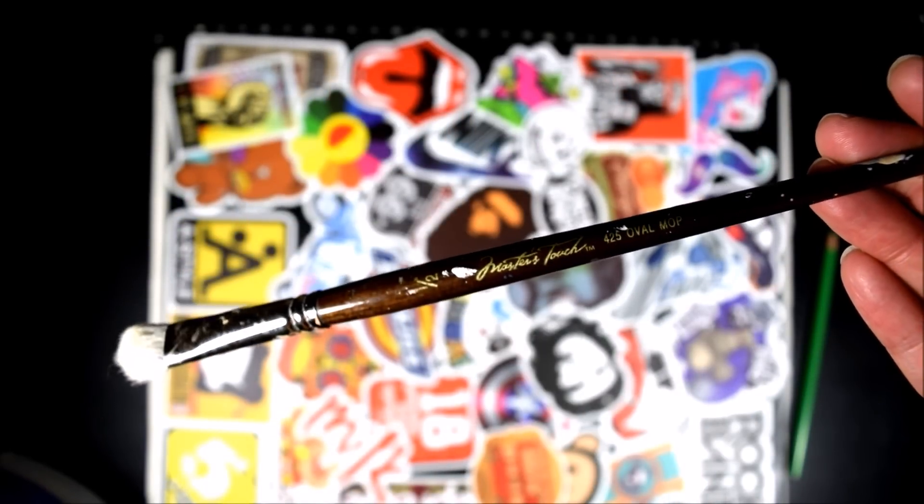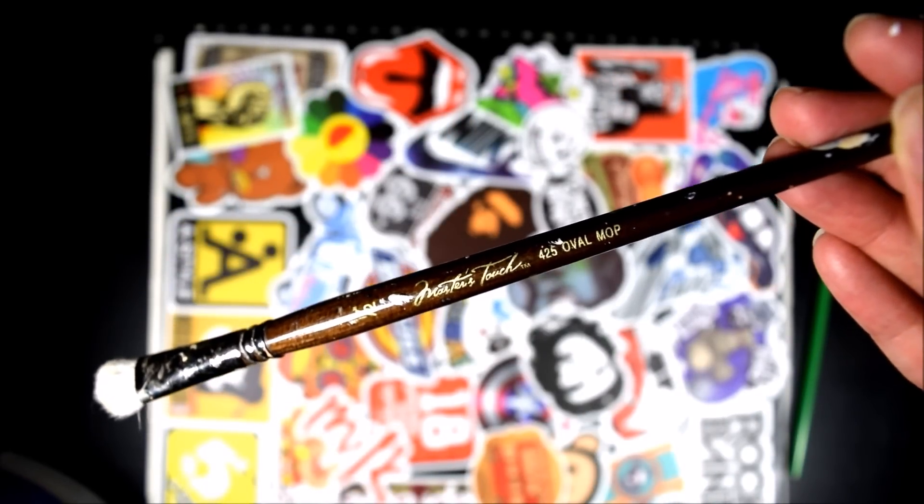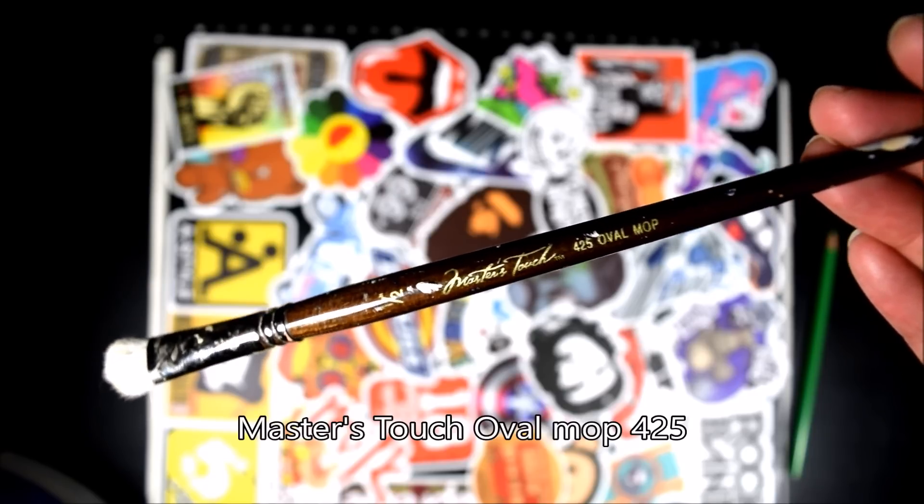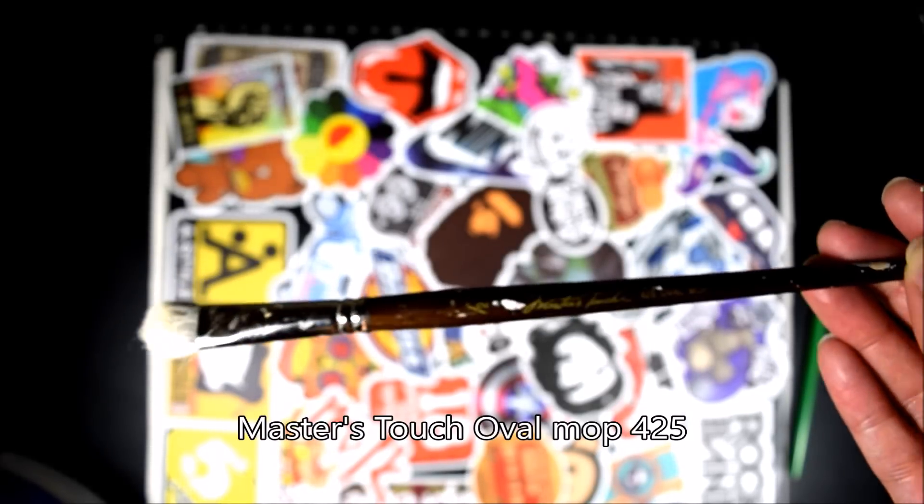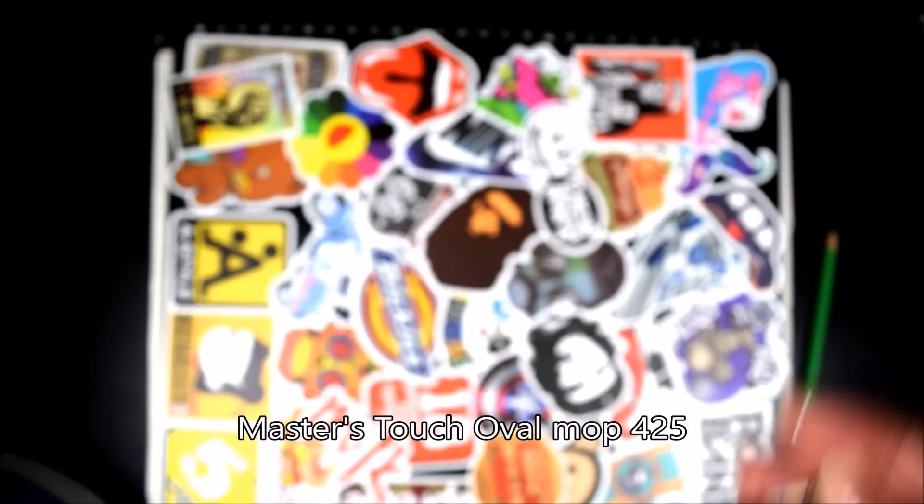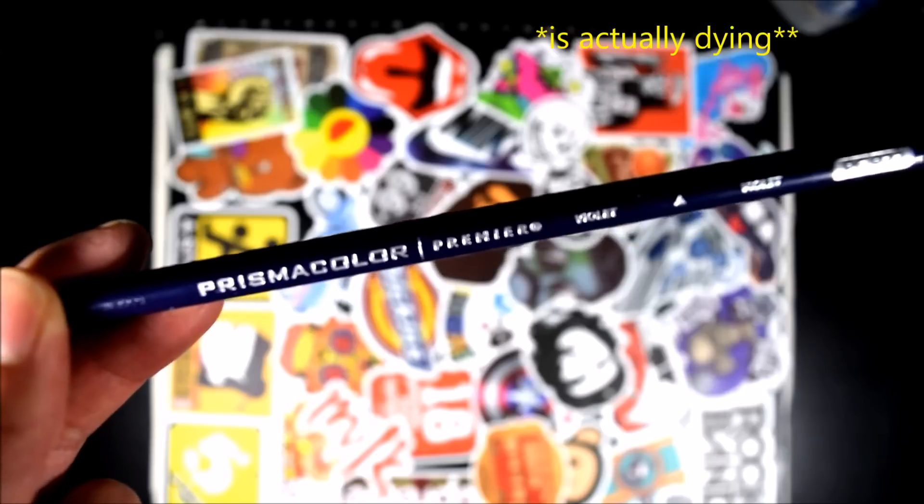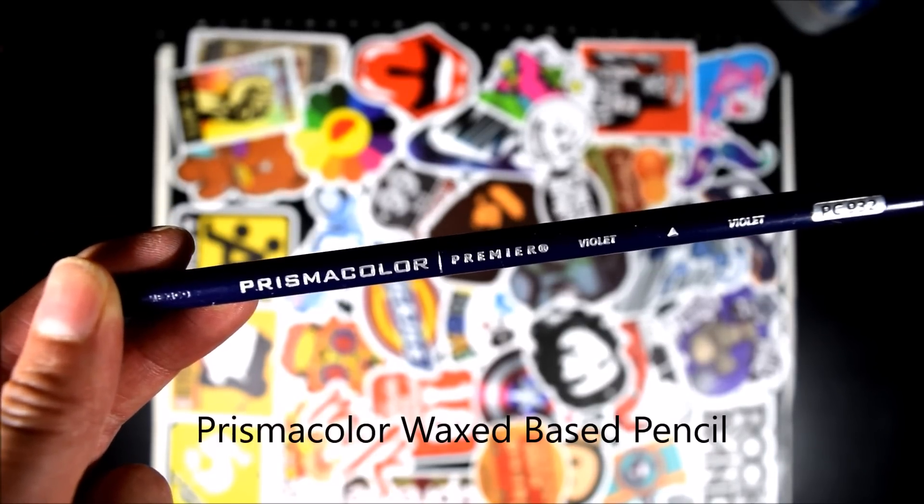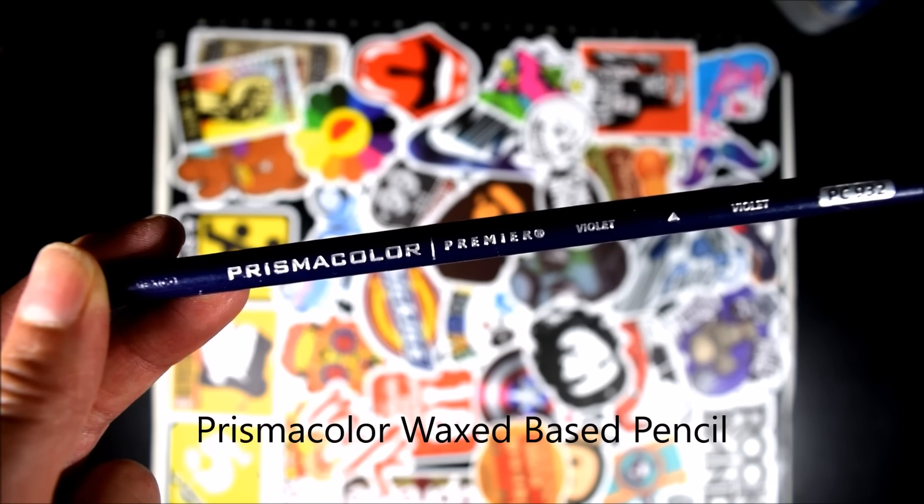For blending, I will be using a 425 oval mop brush by Masters Touch. All the supplies will be in the description box below as always. And real quick before we start, sorry about my voice. I'm a little under the weather today, so my voice is kind of messed up. And last but not least, I will be using a Prismacolor wax-based colored pencil. And with that being said, let's just start.